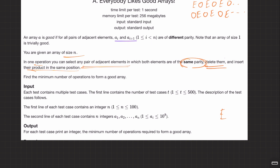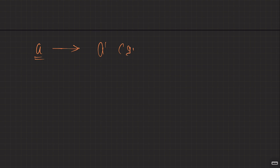To recap: you're given array A. Apply operations — pick two adjacent elements of same parity, replace with their product — to convert it into a good array where every adjacent pair has different parity. The good array looks like either even-odd-even-odd or odd-even-odd-even. Find the minimum number of operations.